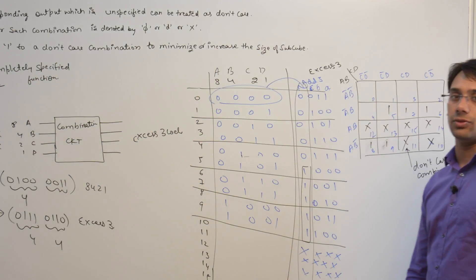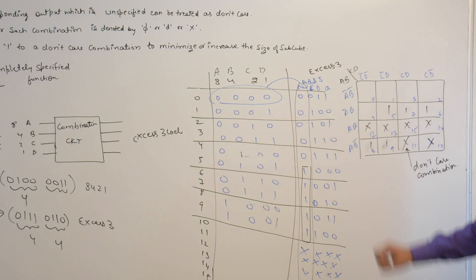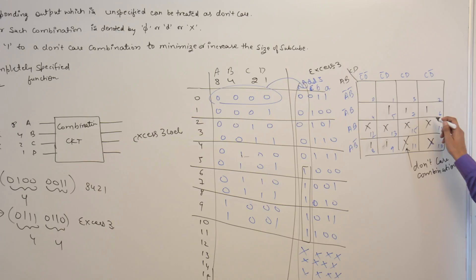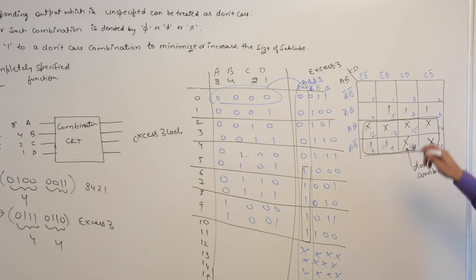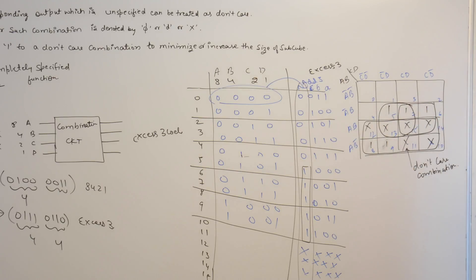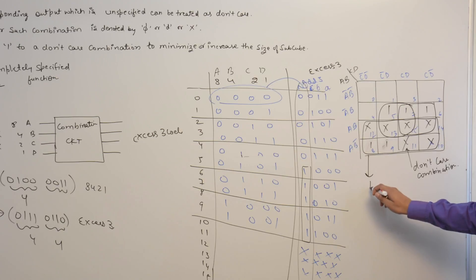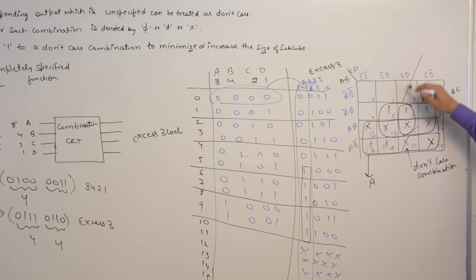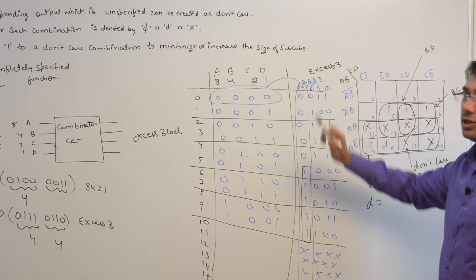We can assign 0 or 1 to a don't care combination to minimize or increase the size of a subcube. If we increase the size of a subcube, we can minimize the number of literals representing it. For this K-map we can form three subcubes: one large subcube, another subcube, and a third subcube, allowing us to minimize the number of literals.